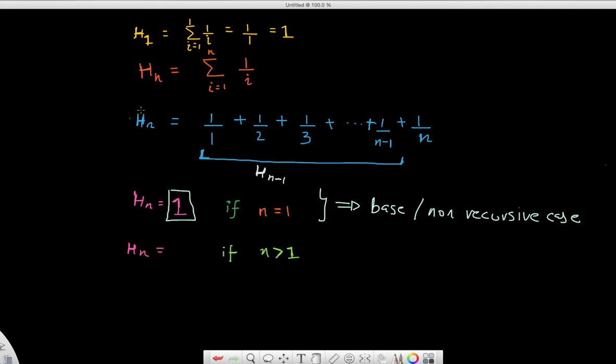Okay, so to find h of n is nothing but equal to whatever is h of n minus 1 plus whatever is the remaining piece in my problem. The remaining piece is 1 over n, so plus I'll just take that 1 over n as it is and put it over there. Okay, so what is h of n equal to when n is actually greater than 1? Well, this can be solved using recursion, and solving this recursion I'm going to say this entire thing is equal to h of n minus 1 plus 1 over n.